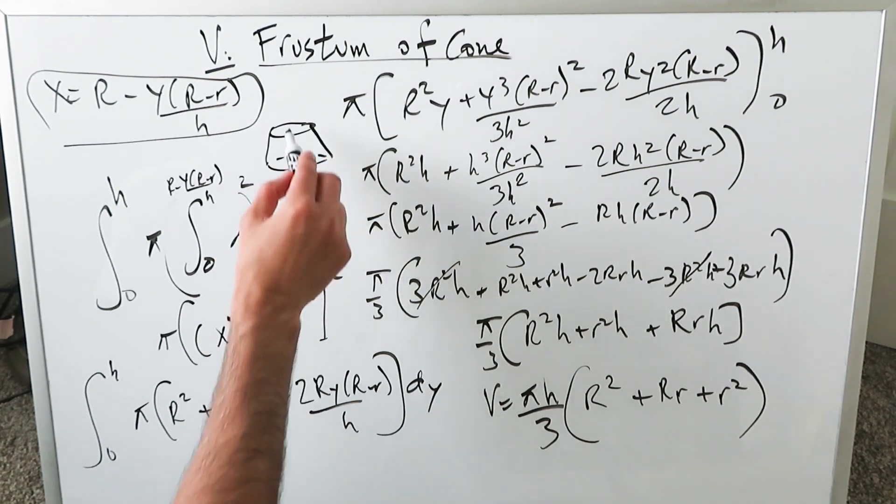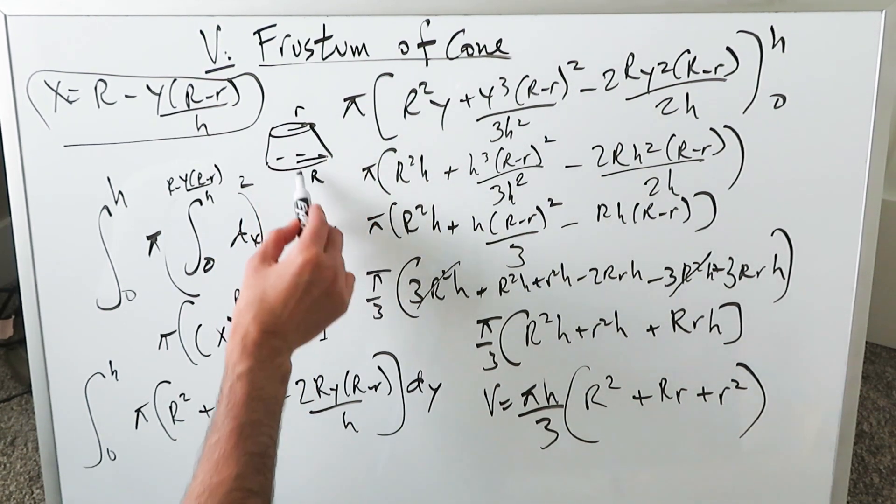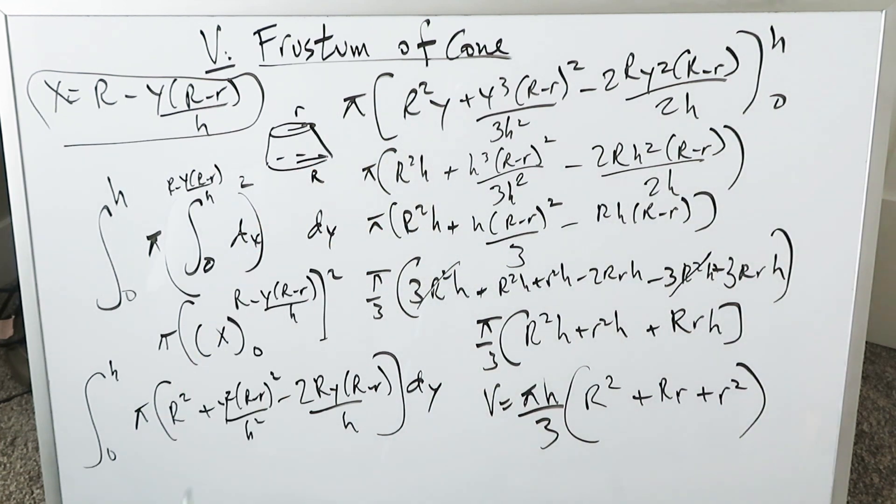This is what we have. A frustum. Here's my lowercase r. Here's my capital r. Major radius, minor radius. This obviously is larger. The one in the top is smaller. And the volume formula is right there. Thank you for watching. Have a good day.